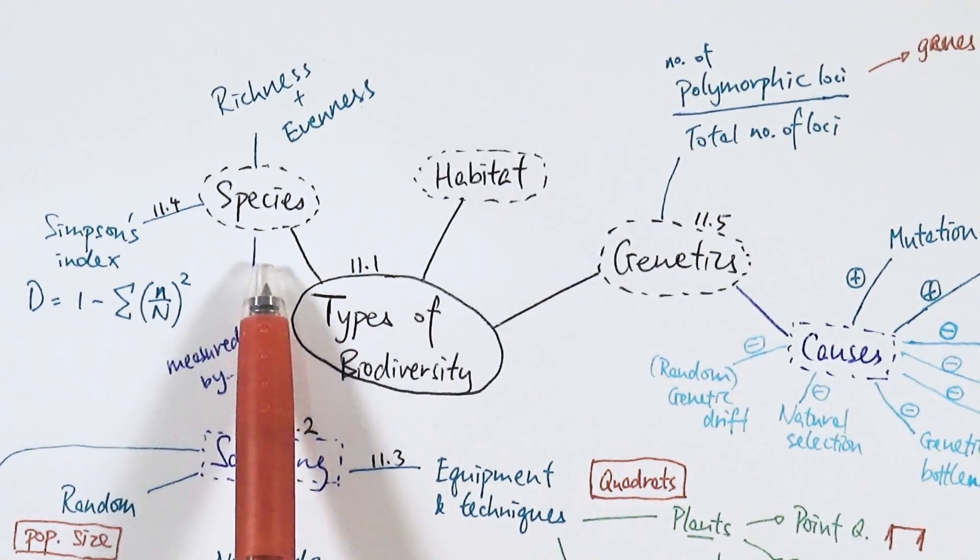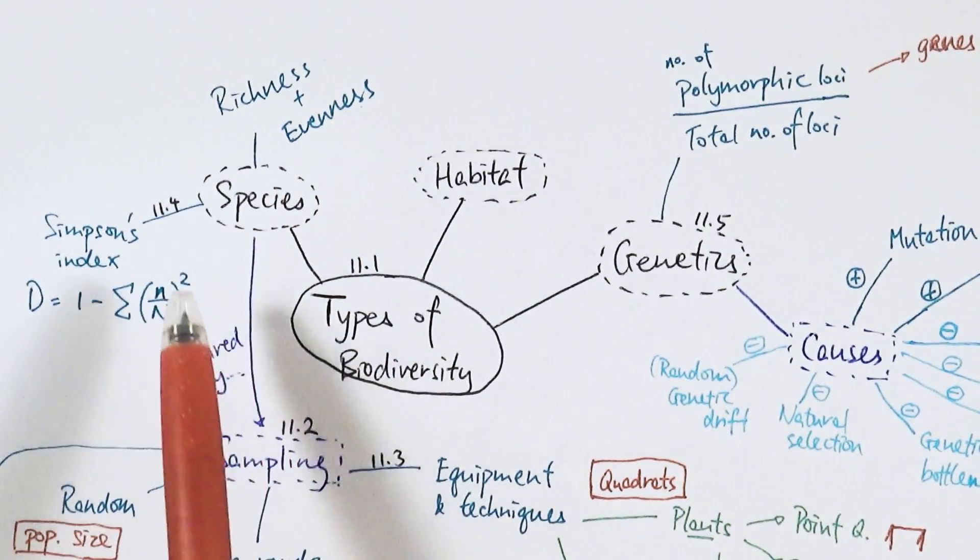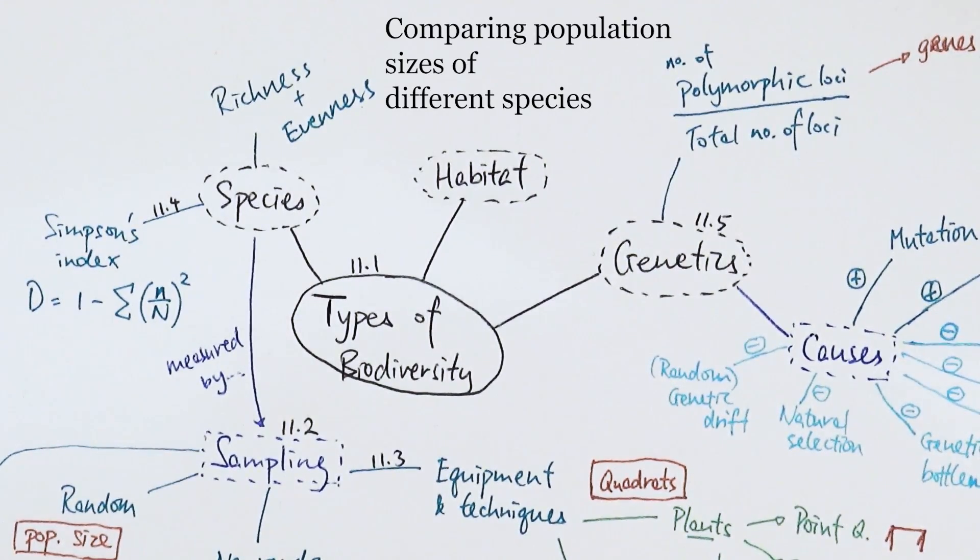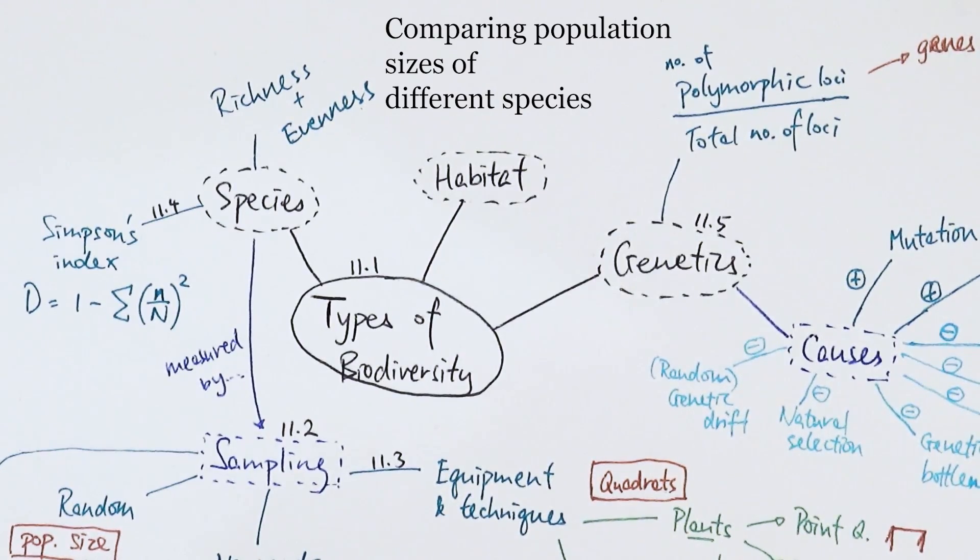Species biodiversity is made up of two parts: species richness and species evenness. Richness refers to the number of different species in a particular area, not the number of individuals but the variety of species. Evenness refers to comparing population sizes of different species—are they balanced? For example, 50% species A and 50% species B, or 10% species A and 90% species B.